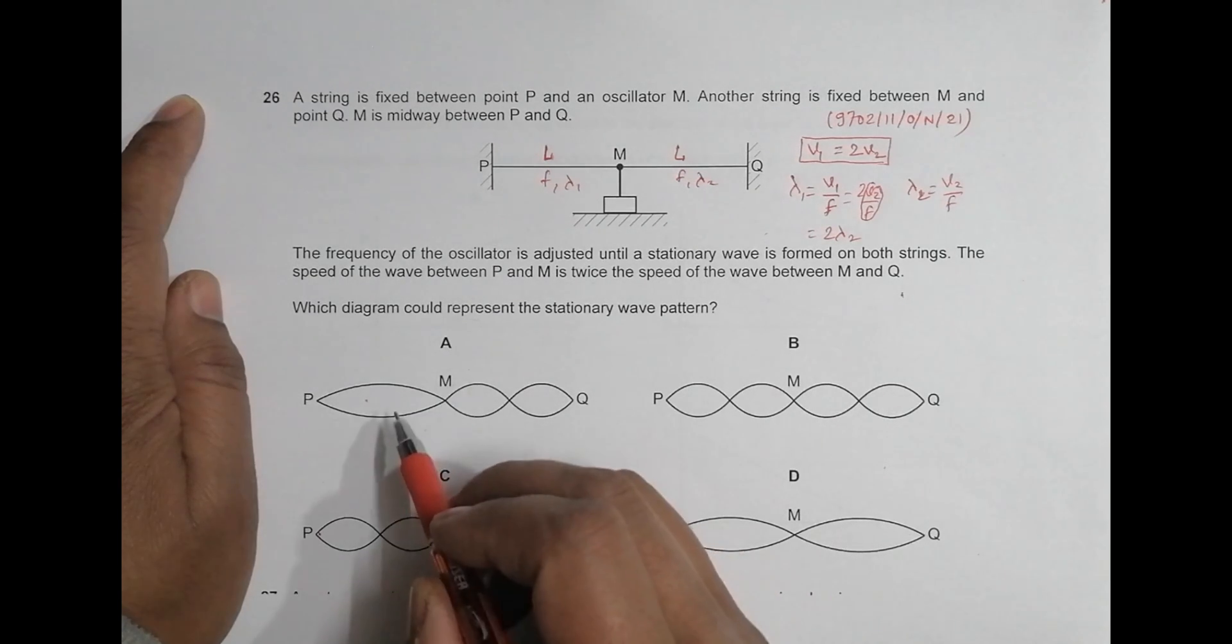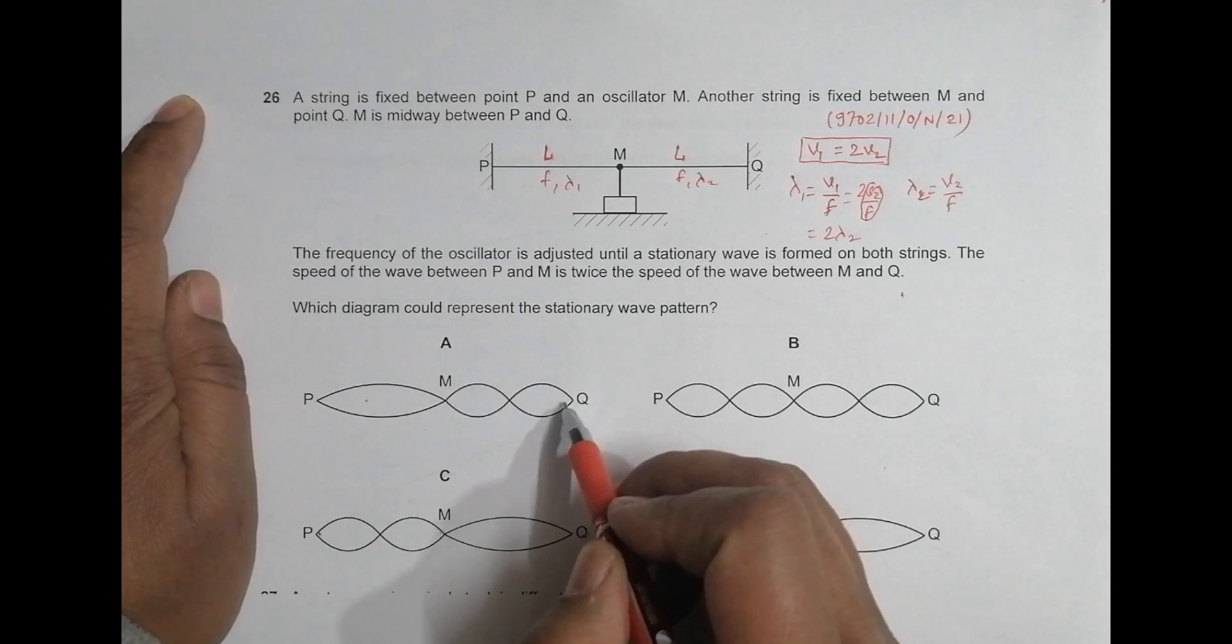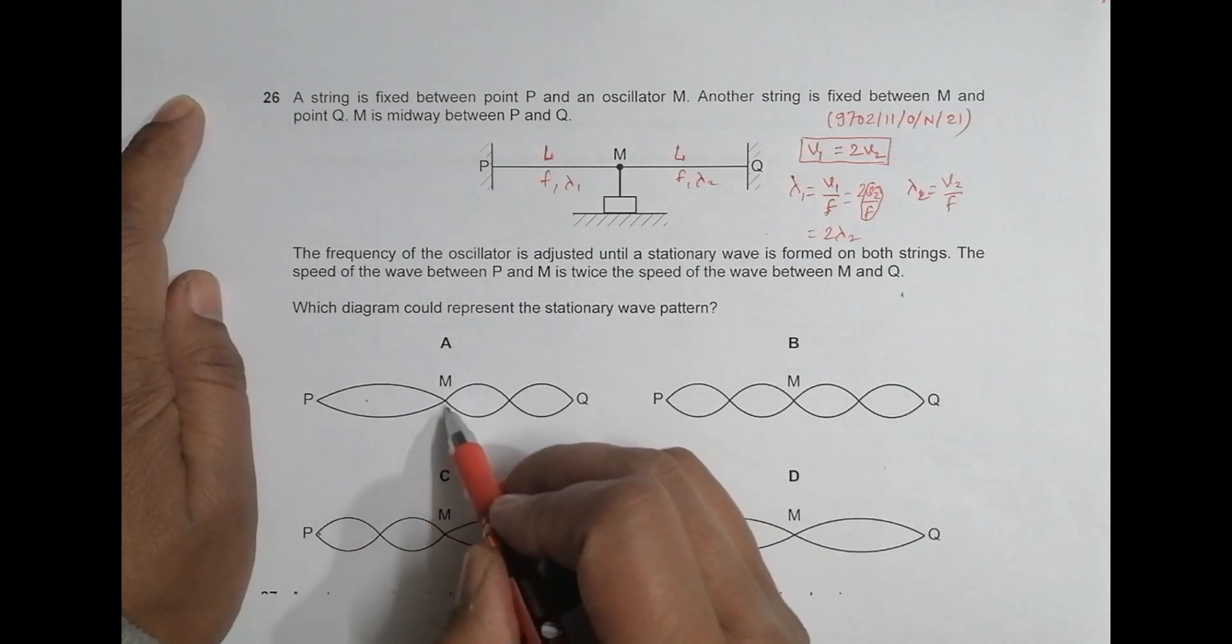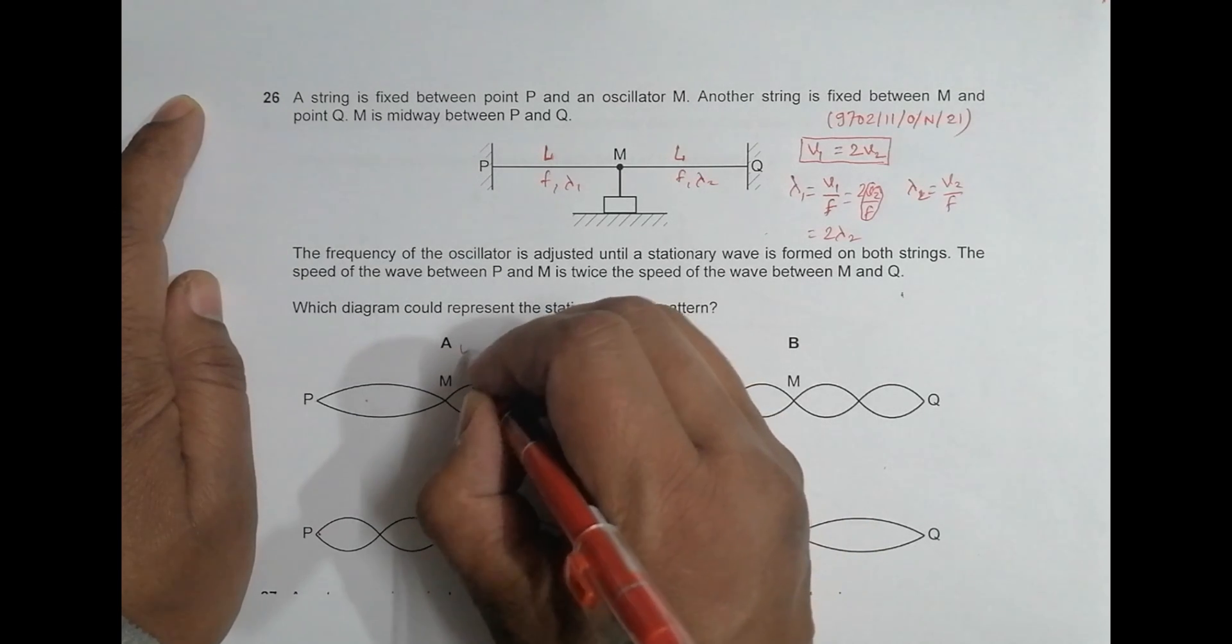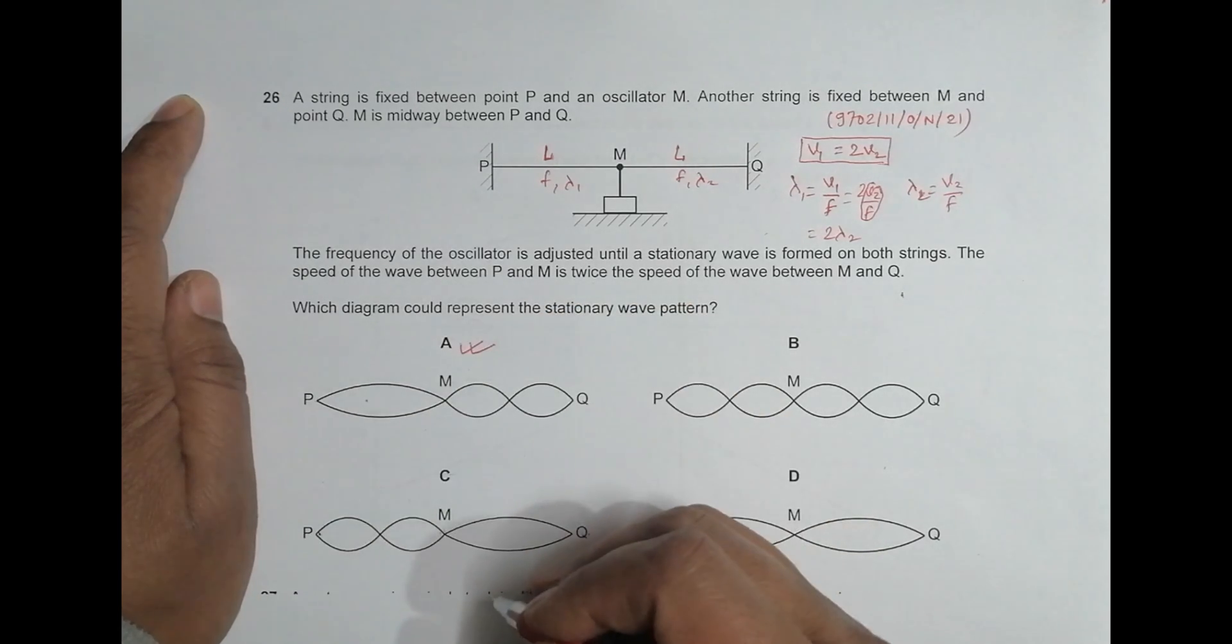So the only one way in which this wavelength is long wavelength and short wavelength—its wavelength from here to here, will be from here to here—so choice A is the only choice which can give us the correct answer.